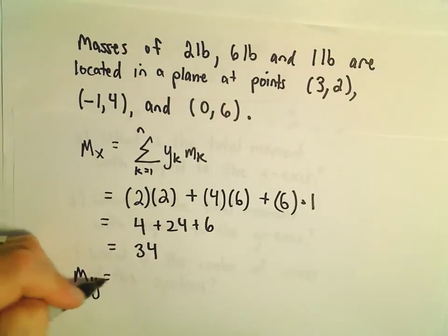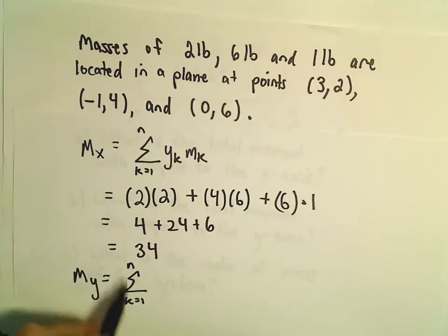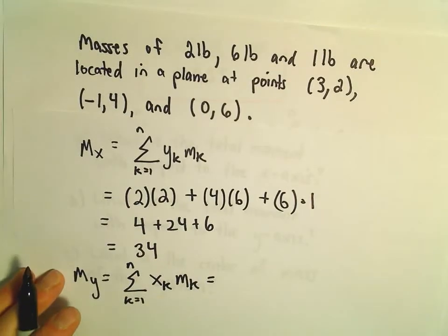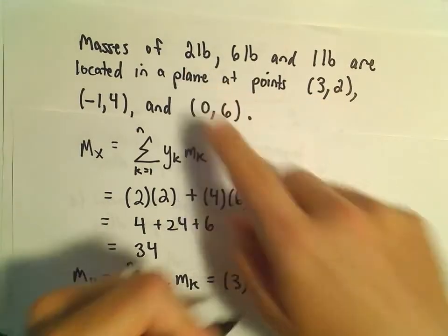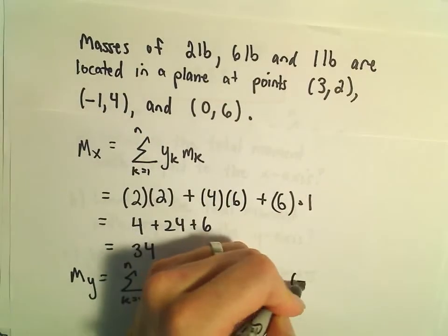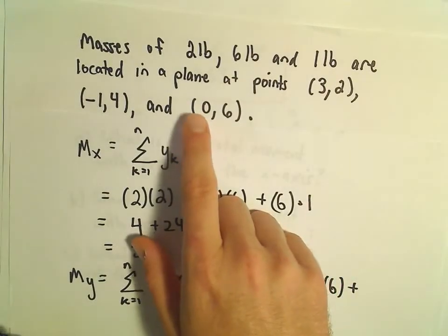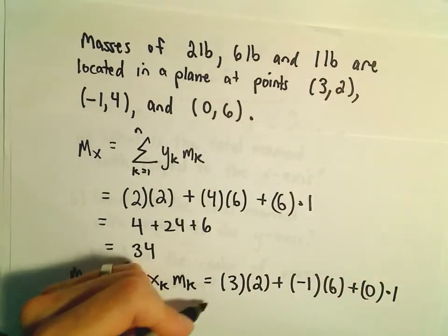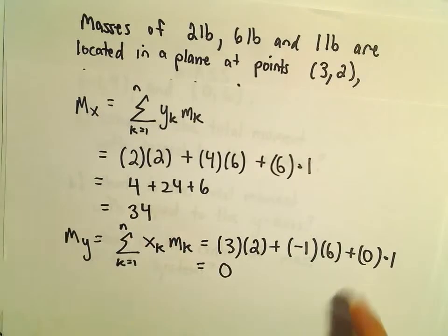Likewise, we can get the moment about the y-axis by doing almost the same thing. We'll go from k equals 1 up to n, and this time we'll take x sub k times the mass. Now we use the x coordinates instead of the y coordinates. The x coordinate of the first point is 3 with weight 2, plus the next x coordinate which is -1 multiplied by its weight of 6, plus the last point which has x coordinate 0 multiplied by its weight of 1. In this case, we get 6 minus 6, which is 0 plus 0, giving us a value of 0.